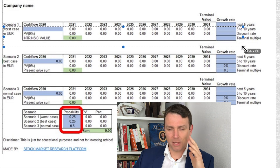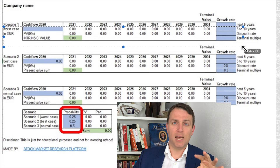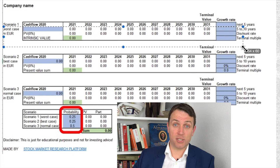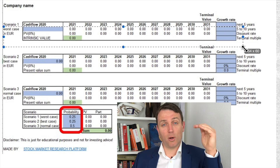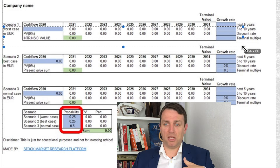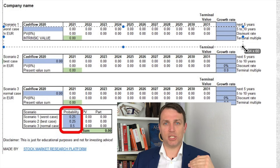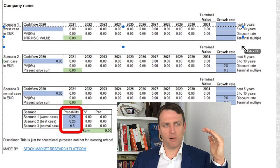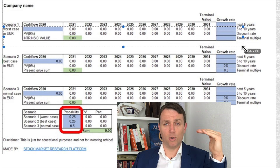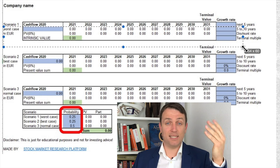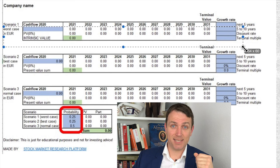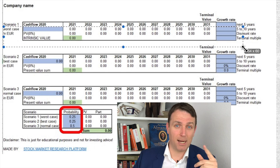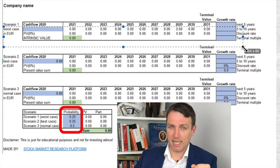Always think about how certain you are about your projections. When you compare across, say, 20 positions in your portfolio, you see that some you're less certain about and some you're more certain about. A more certain investment can be better even if the intrinsic values are the same.